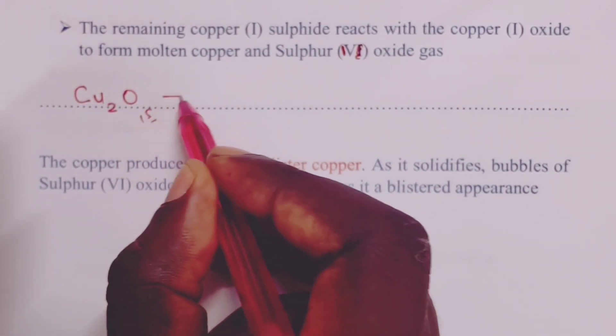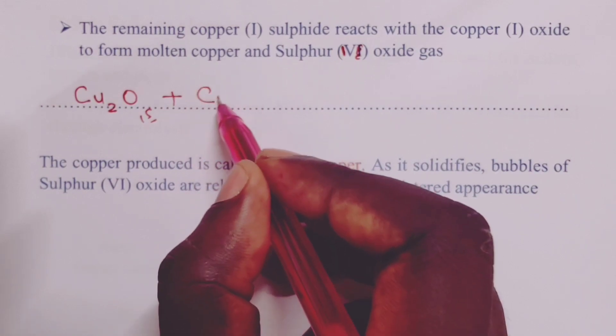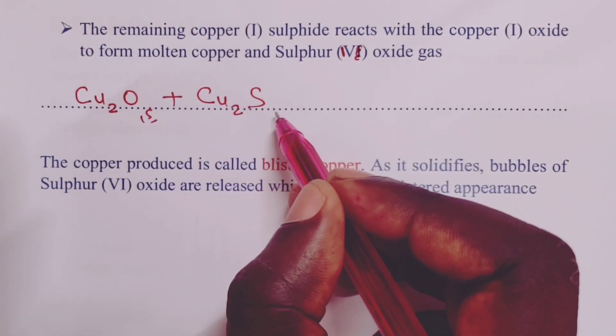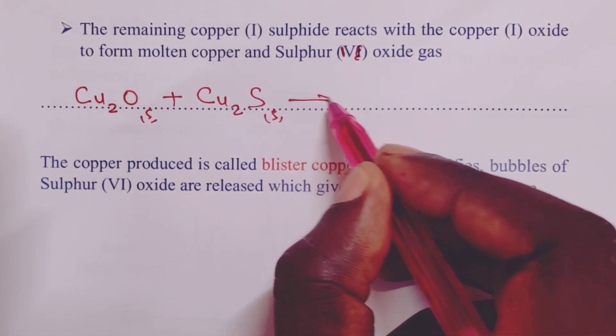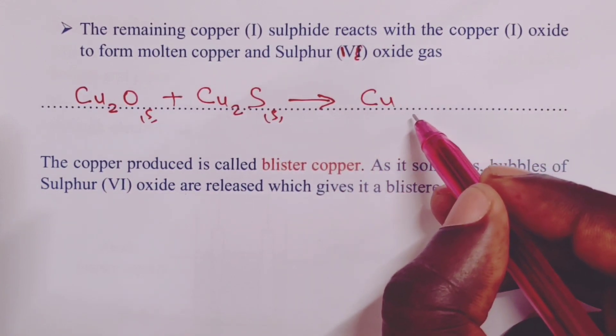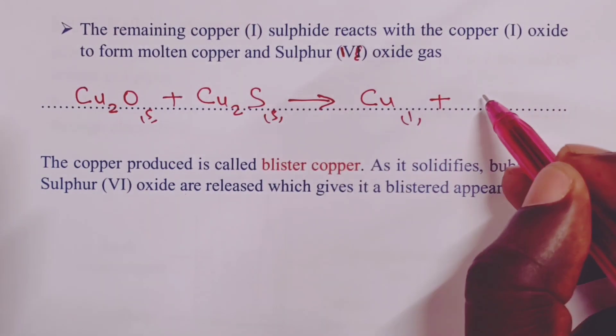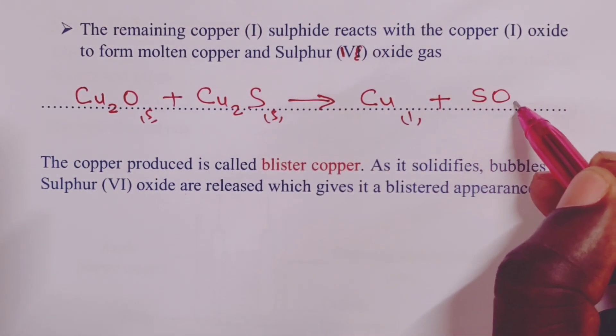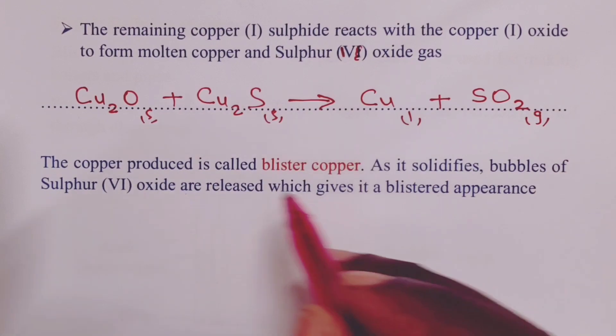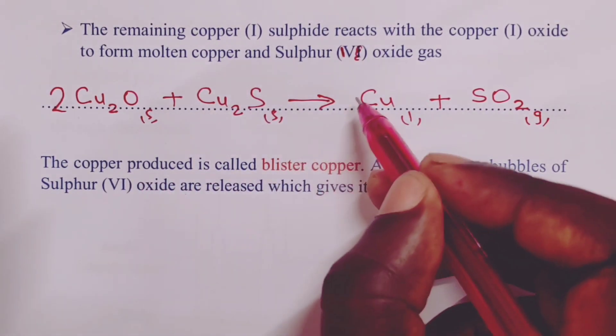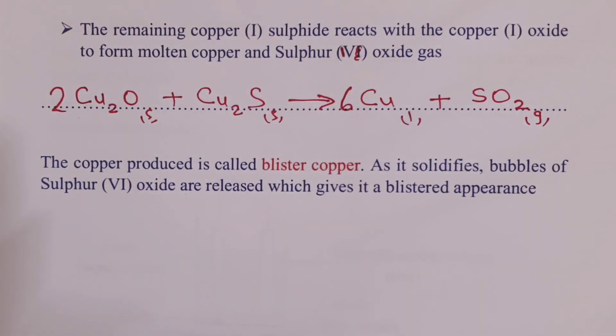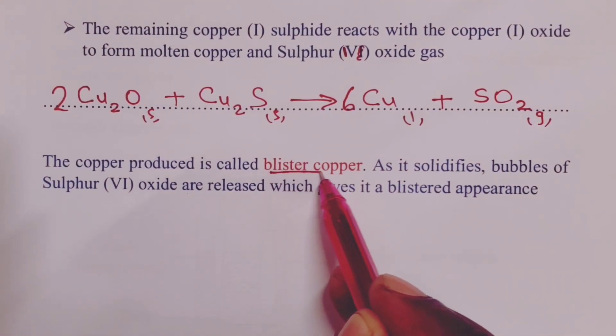The equation for that reaction will be as follows. Copper-1-oxide reacting with copper-1-sulfide, the bit that was not reacted during the previous process, will give us copper, of course in a molten state, and a little more of sulfur-4-oxide gas. We shall balance our equation with a 2 on the copper-1-oxide and a 6 on copper metal.